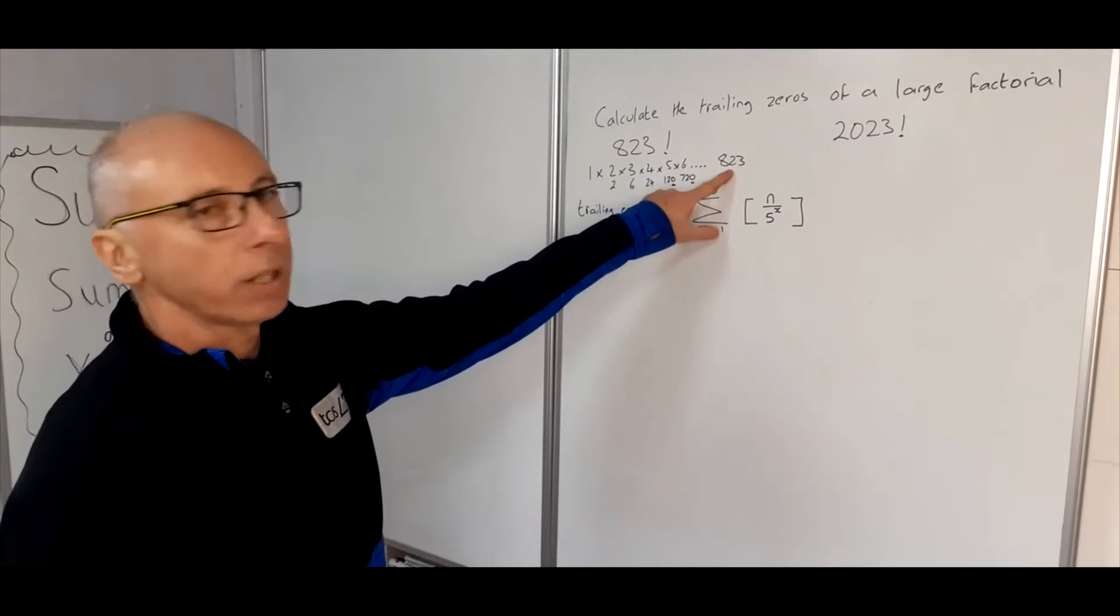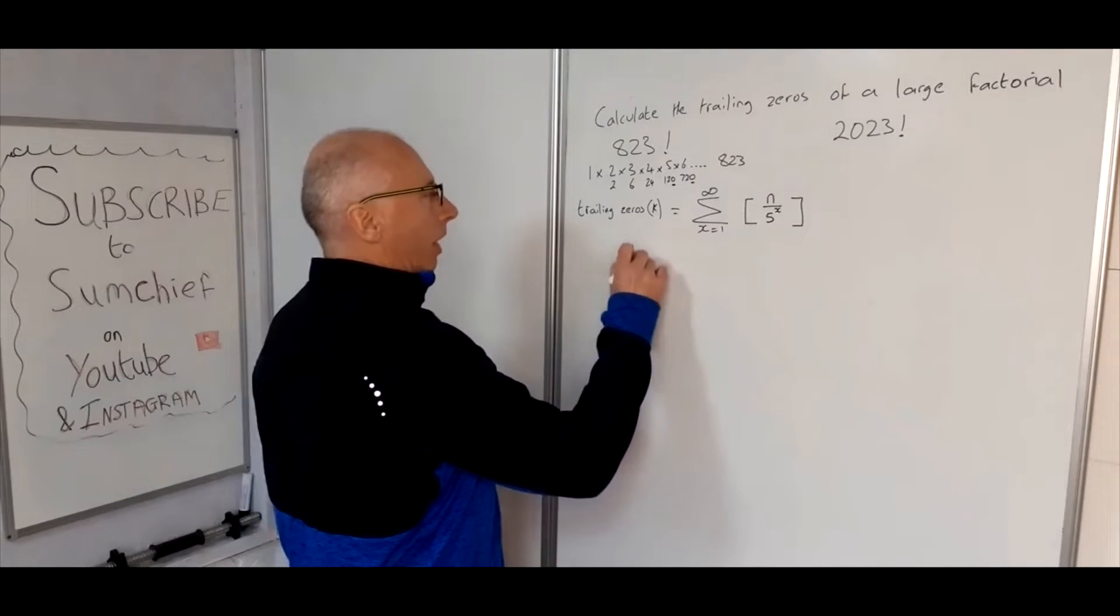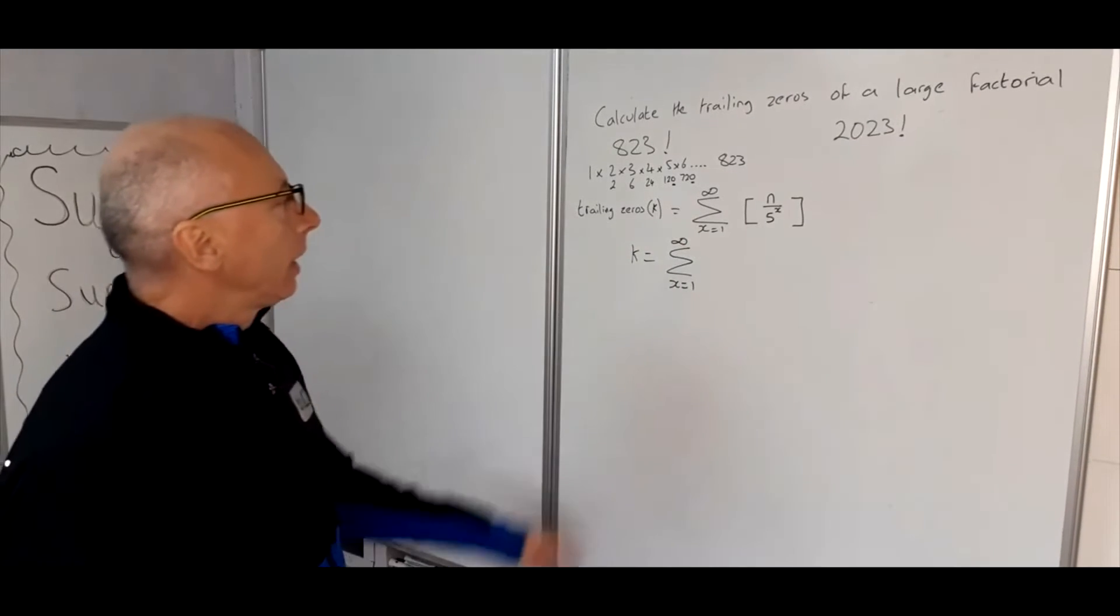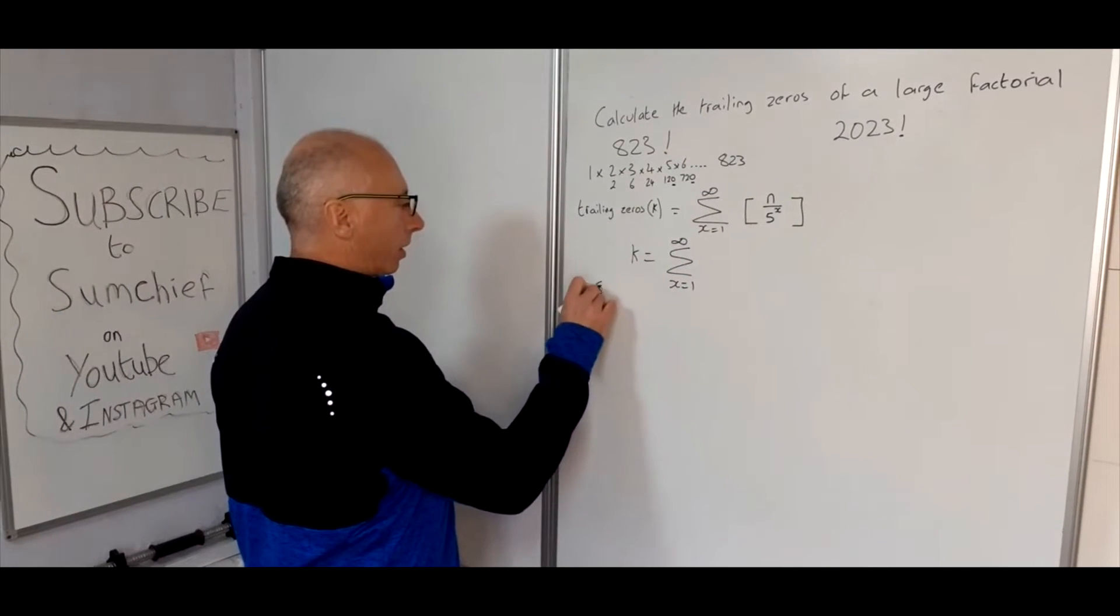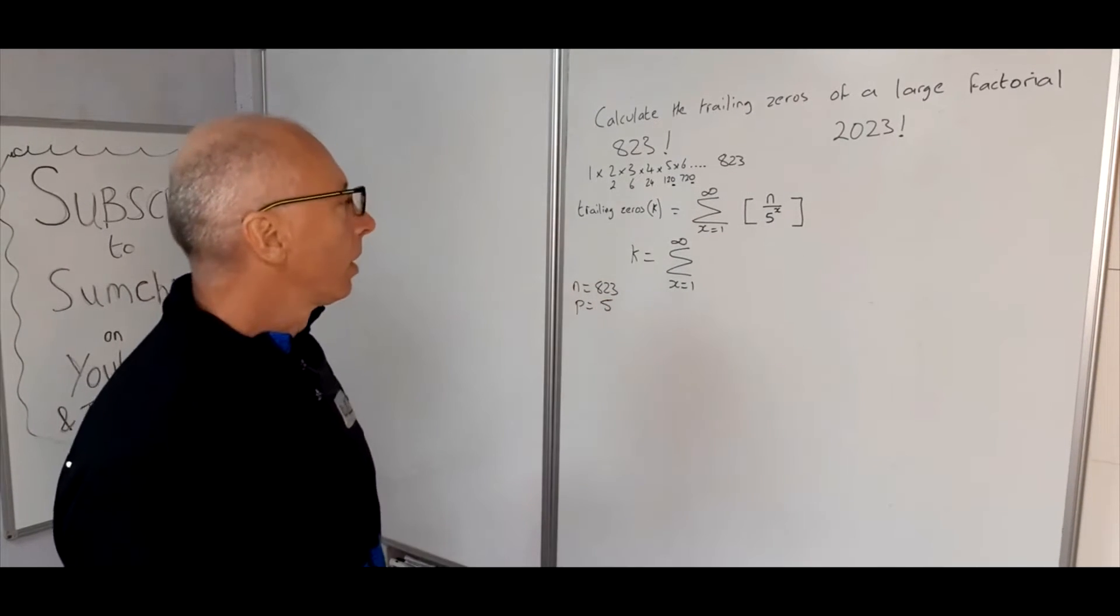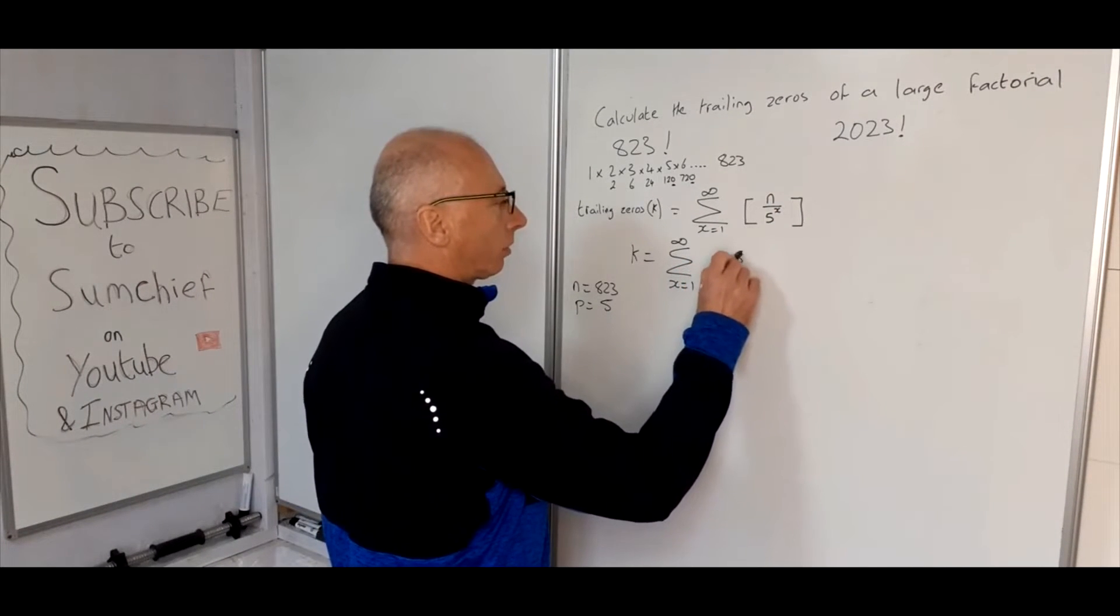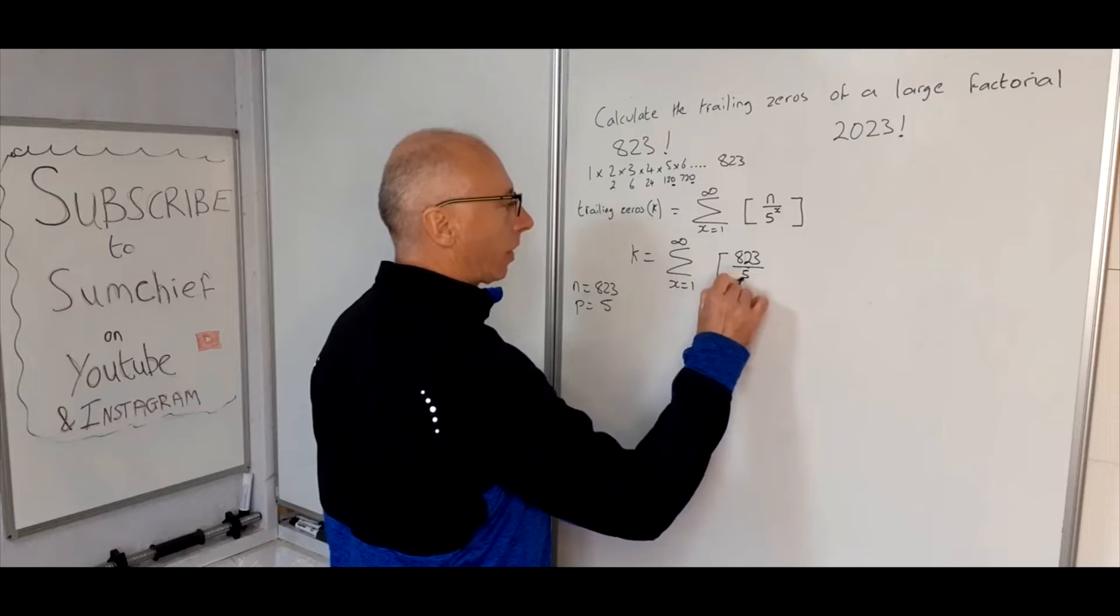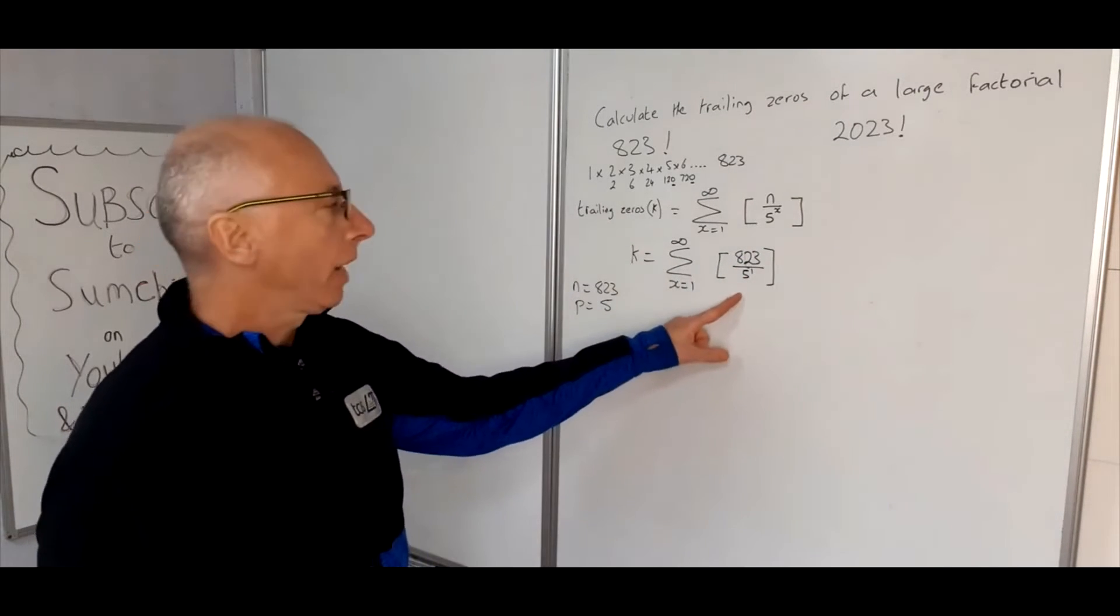So we're interested in 823 factorial, so let's just plug that in. k equals sum from x equals 1 to infinity. Now our n in this case is 823, so let's just write that down here. And the p is 5, we're only interested in 5 anyway because it's trailing zeros. So 823 divided by 5 to the power of 1 in this first case.